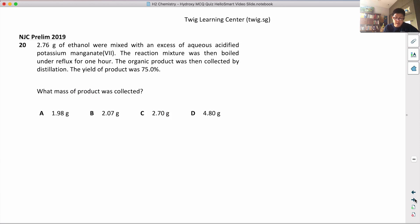Ethanol was mixed with excess acidified potassium manganate. The reaction mixture was then boiled under reflux for one hour. The organic product was then collected by distillation.